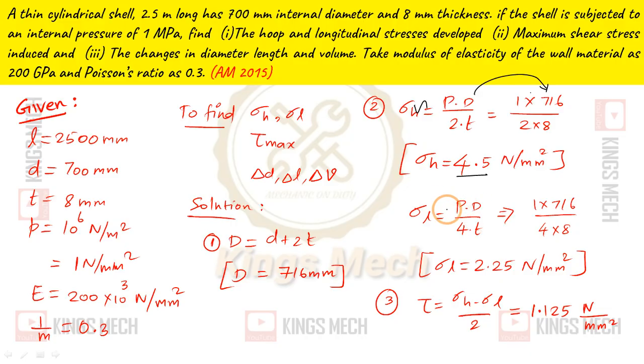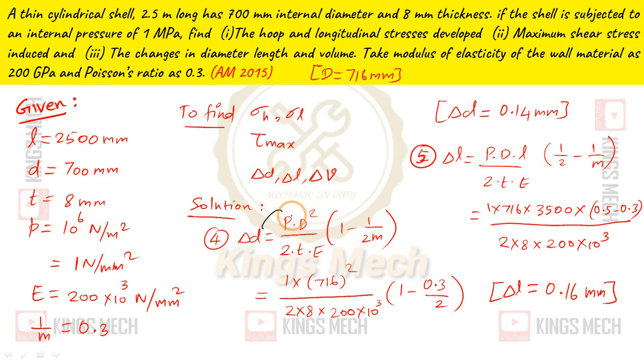That gives us 4.5 N/mm². Sigma L, longitudinal stress, PD by 4t, 4 into t. This is 2.25 N/mm². Tau max, which is equal to hoop stress minus longitudinal stress divided by 2. Minus value divided by 2, equals 1.125 newton per mm square. So, hoop stress, longitudinal stress, maximum shear stress. Now del D, del L, del V.